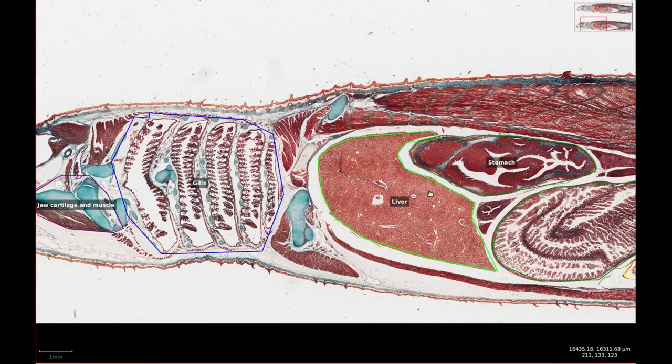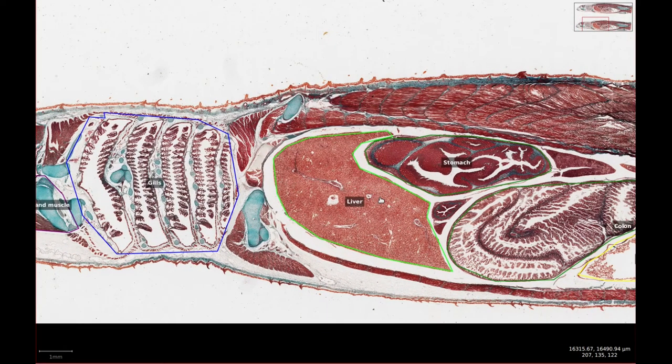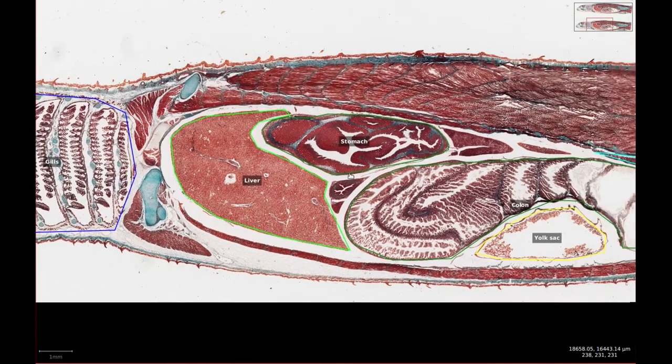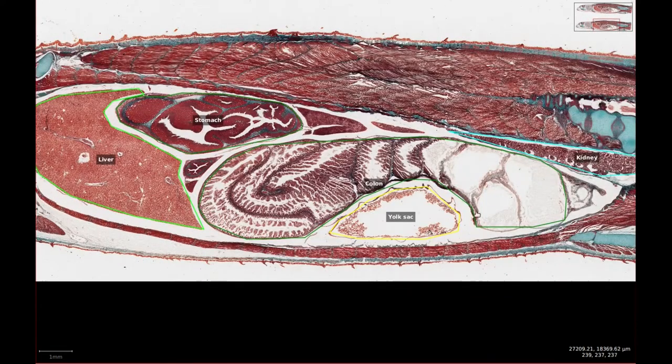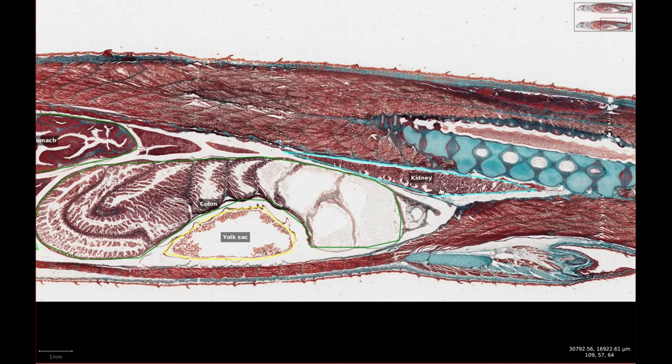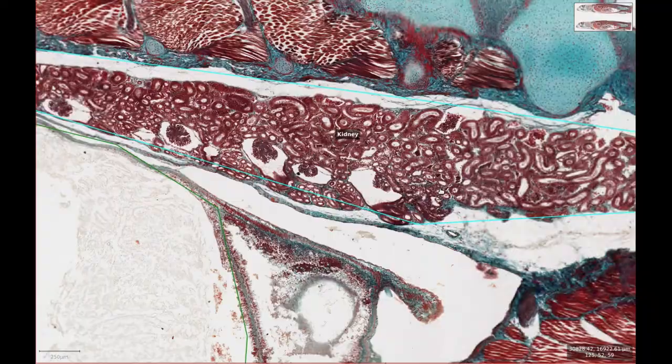Within the coelomic cavity there are good sections of liver, stomach, and colon with a much smaller portion of the yolk sac. Again there's a small section of kidney adhered to the dorsal body wall.